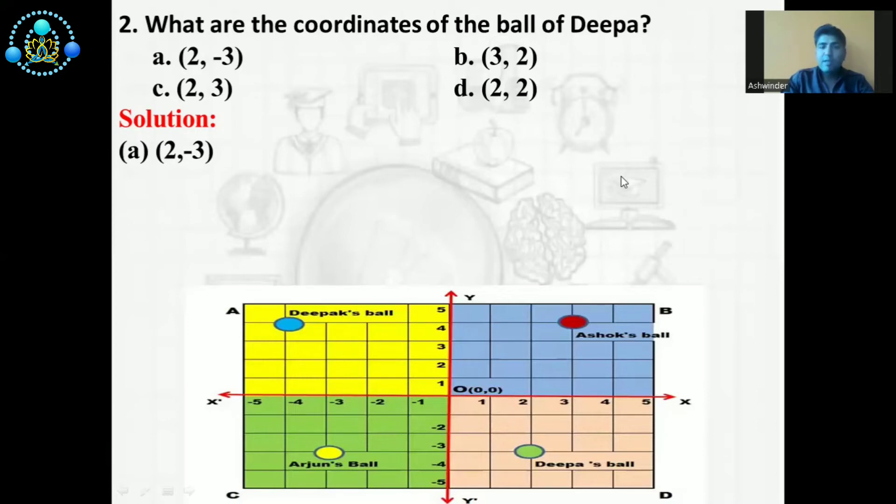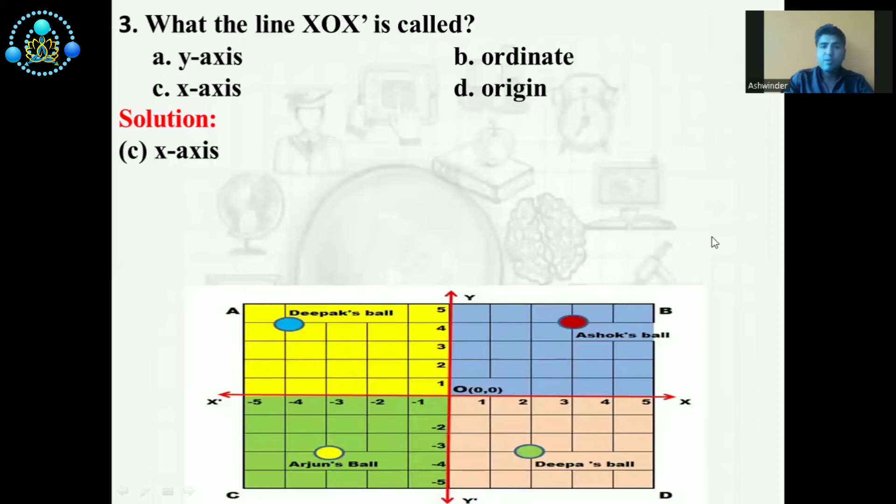Why? See the reason behind it. Where we will see Deepak's ball position, we will see X is 2 and Y' that is minus 3. So the correct option is A, 2 and minus 3. Now we will discuss the next question.